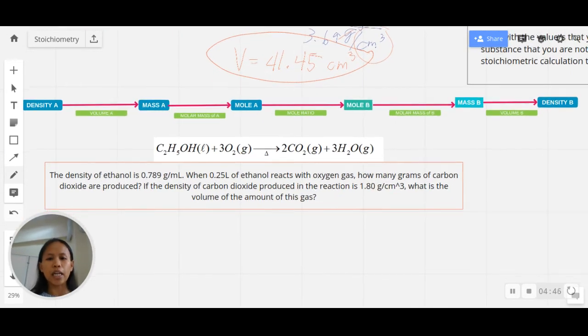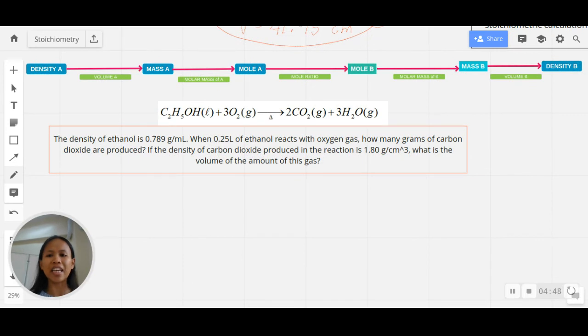Let me end this short recap of density by giving you this problem. I'm making this more challenging on your part—this is a density-to-density problem. Let me leave you with this. I'm giving you the density roadmap given density A and ending up with density B. I am placing here the conversion factors—there are five of them that you can use. I'm giving you the chemical equation of the combustion of ethanol gas. Ethanol liquid reacts with oxygen gas forming carbon dioxide gas and water vapor.